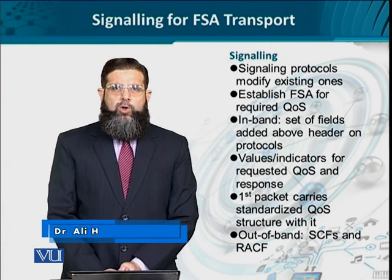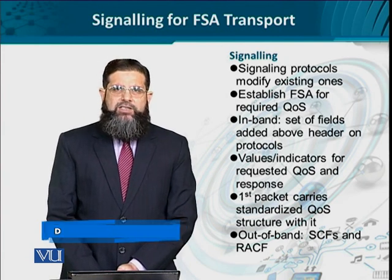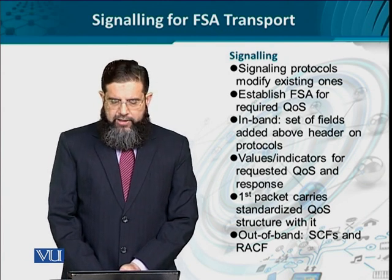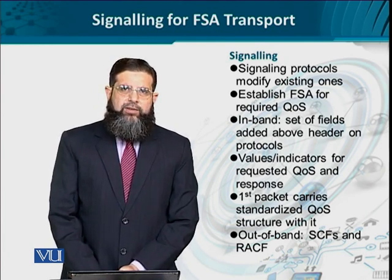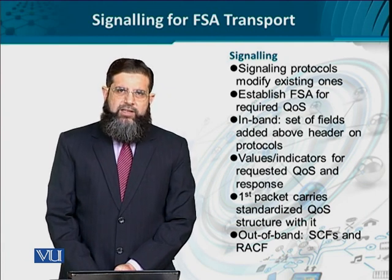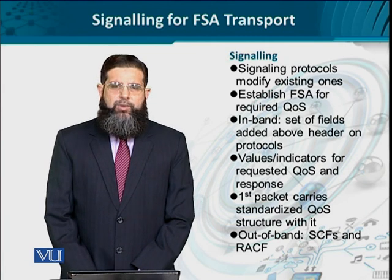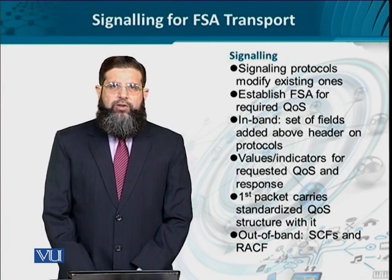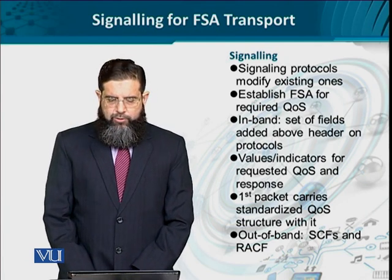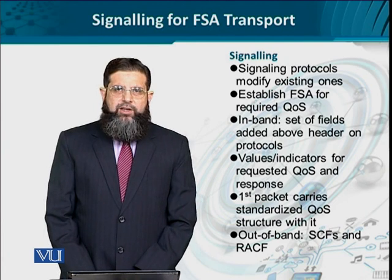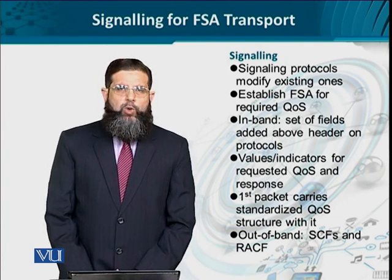The signaling protocols used for FSA transport in NGNs are based on extensions or modifications of existing protocols. Existing protocols at the data link layer like Ethernet, or at the network layer like IP, have their own default headers. Above these headers, additional information is encapsulated to exchange QS information — this is known as in-band signaling. These additional fields provide parameters, their values, and indications such as request, response, deny, and accept, to implement QS for each flow.